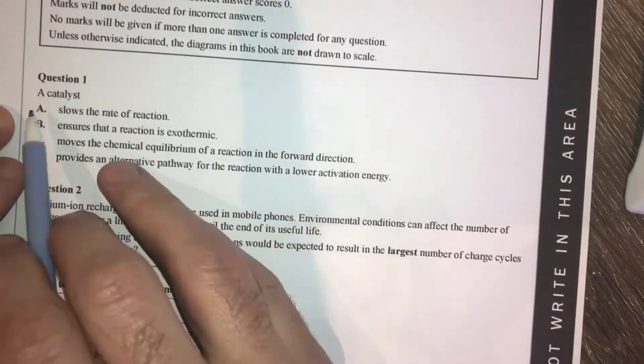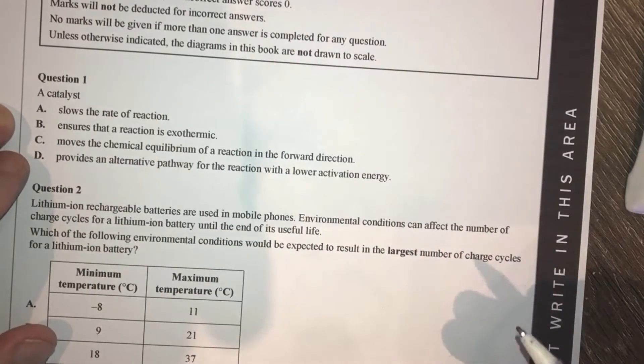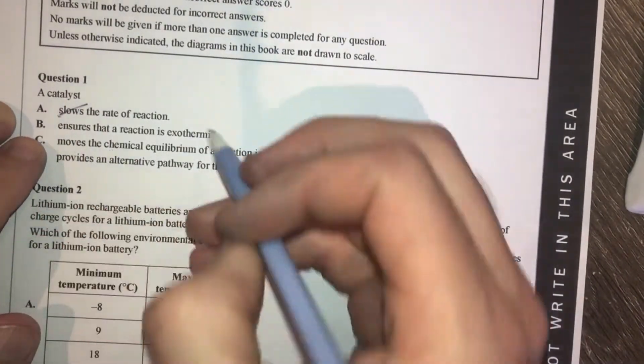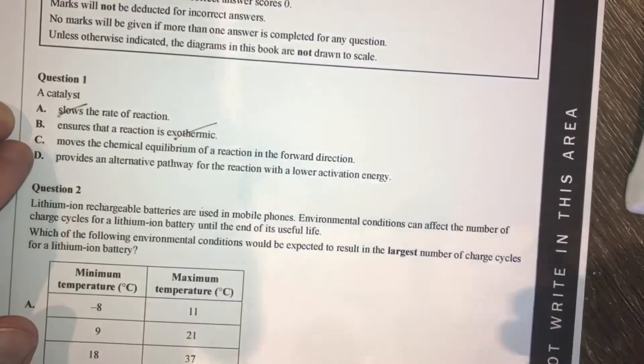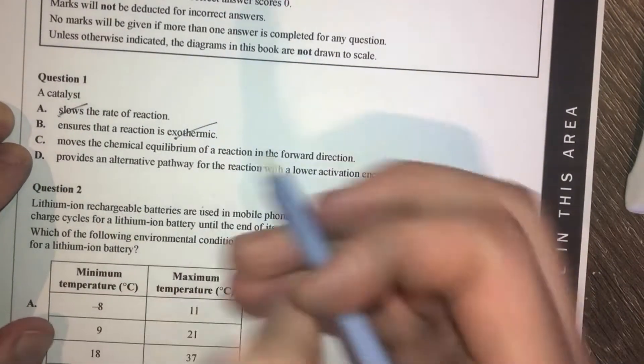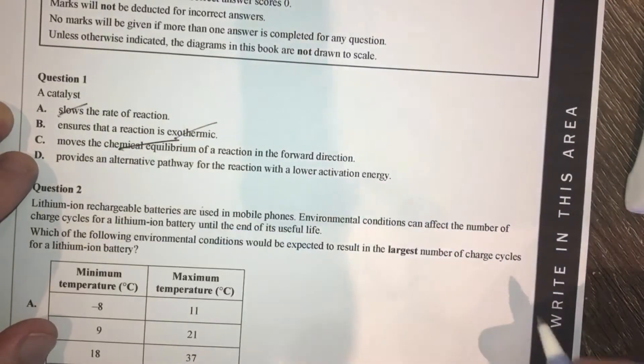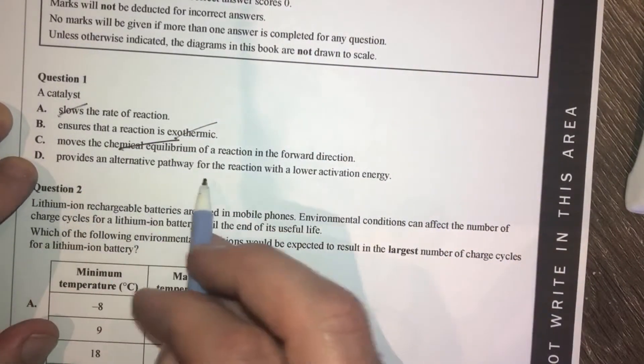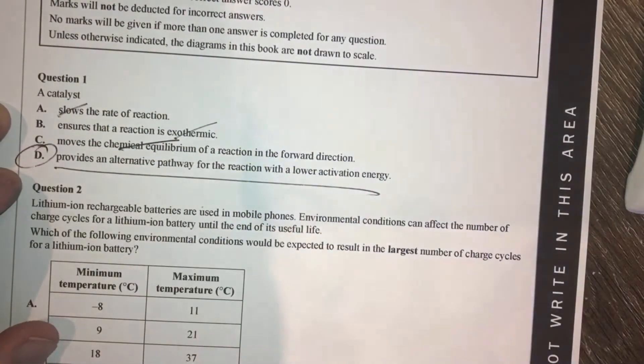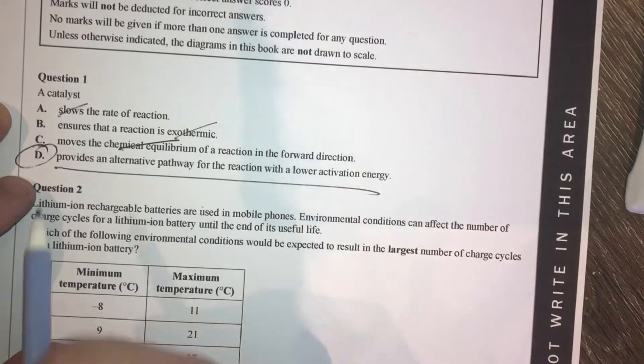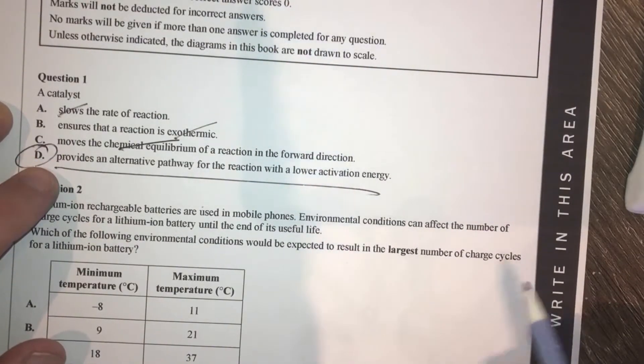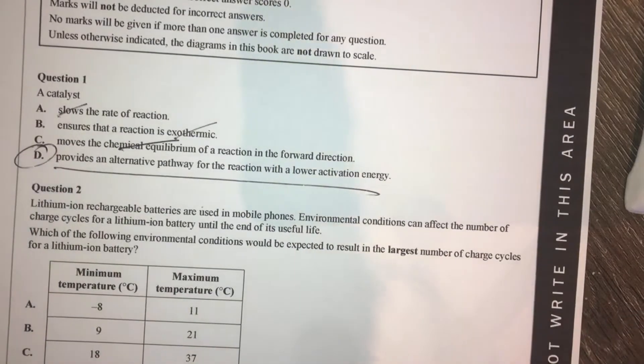Question 1, looking at multiple choice, what does a catalyst do? First of all, it does not slow down a rate of reaction. It doesn't ensure exothermic. A catalyst speeds up a rate of reaction. Moves the chemical equilibrium? A catalyst doesn't change chemical equilibrium whatsoever. It provides an alternative pathway for the reaction with a lower activation energy. Correctamundo, that is the answer. And that is a really good explanation of what a catalyst does. If you have a short answer question, that's bang on for what you should be saying.